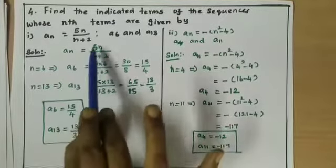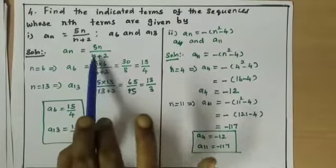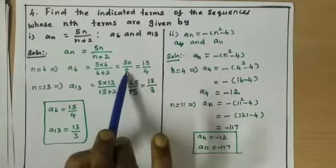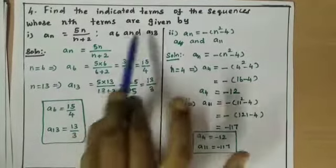For n = 6, a6 = 5 into 6 divided by 6 plus 2. That gives 30 divided by 8, which simplifies to 15 by 4.